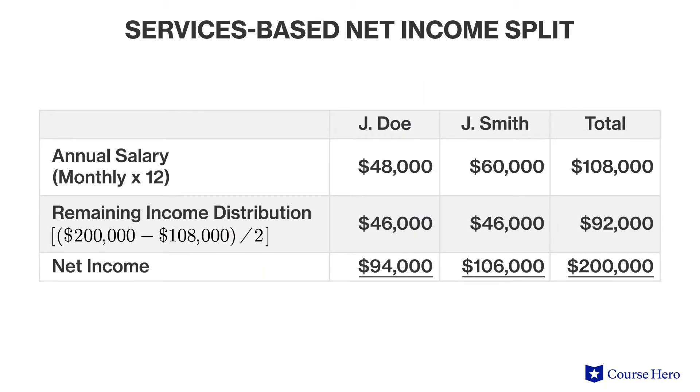If the net income for the period is $200,000, the division between partners is John Doe $94,000 and Jane Smith $106,000. Based on services, Jane will receive a higher share of the net income of the partnership even though the remaining income is divided equally.